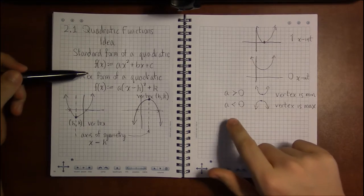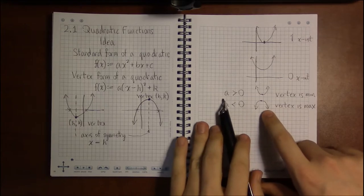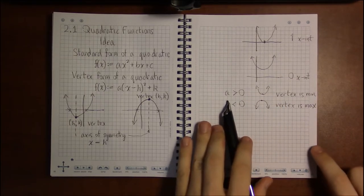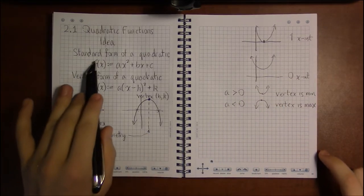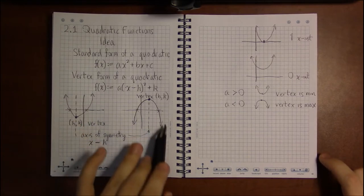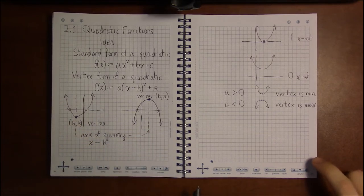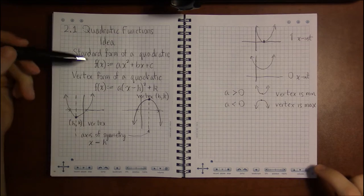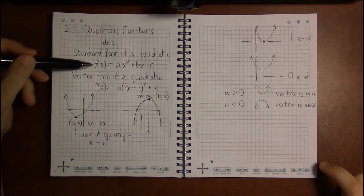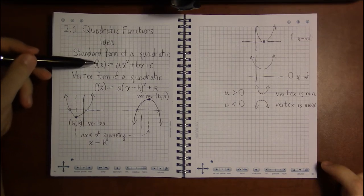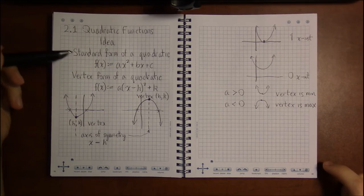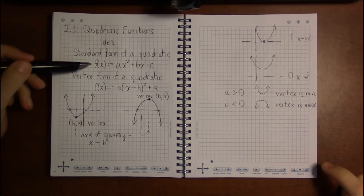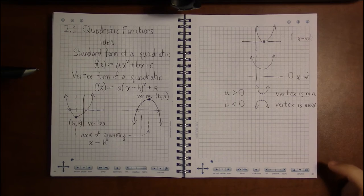So we have the simple connection between the algebra and the graph. In later videos, we're going to talk about how to convert between these two forms, how to use these forms, and then finally how to find the actual x-intercepts.